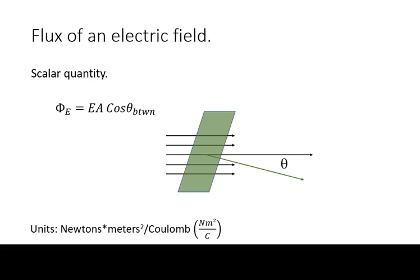Electric flux is a scalar quantity defined as the magnitude of the electric field times the area times the cosine of the angle between the electric vector and the normal vector to the surface. Its units are newtons times meters squared per coulomb.